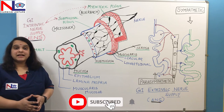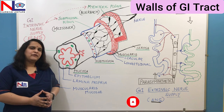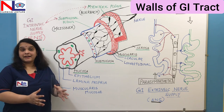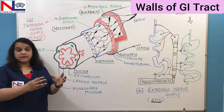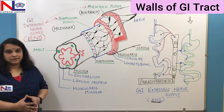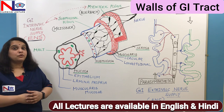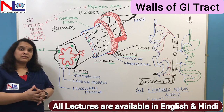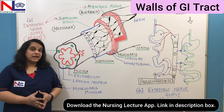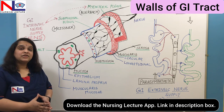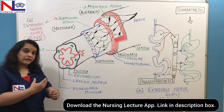Hello everyone. Today in this lecture, I'm going to talk about the layers of the GI tract. The GI tract is the gastrointestinal tract, or the alimentary canal, that extends from our mouth and ends at our anus. It is a hollow tubular structure through which food passes through various processes, and finally we obtain nutrients and eliminate waste from our body. Here I'm going to give you a brief description about the walls of the GI tract.